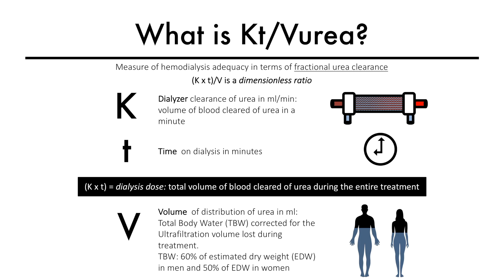The third component is V, or the volume of distribution of urea in milliliters, which equals the total body water corrected for the ultrafiltration volume during a hemodialysis session. Total body water is approximately 60% of the estimated dry weight in men and about 50% in women.